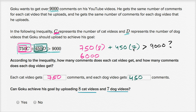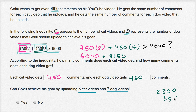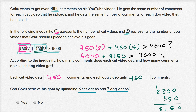And then 450 times seven: 400 times seven is 2,800, plus 50 times seven is 350, giving 3,150. So 6,000 plus 3,150 equals 9,150, which is indeed greater than 9,000. So yes, Goku can achieve his goal by uploading eight cat videos and seven dog videos.